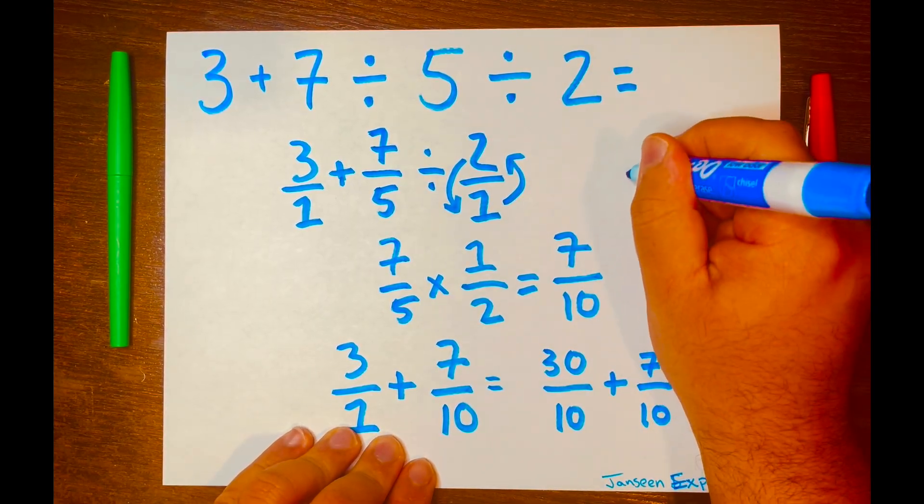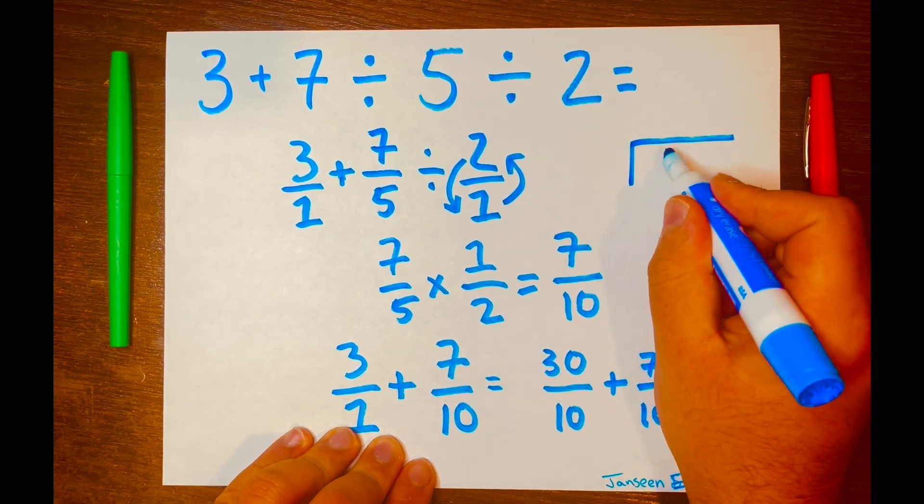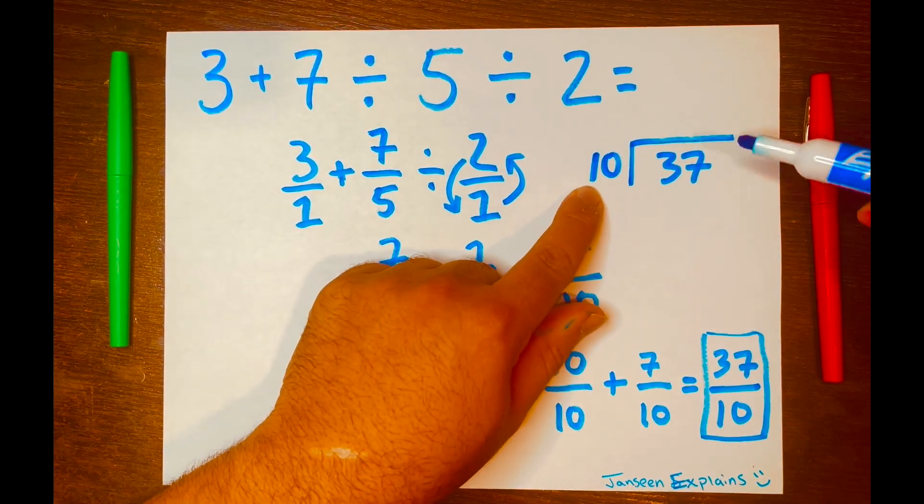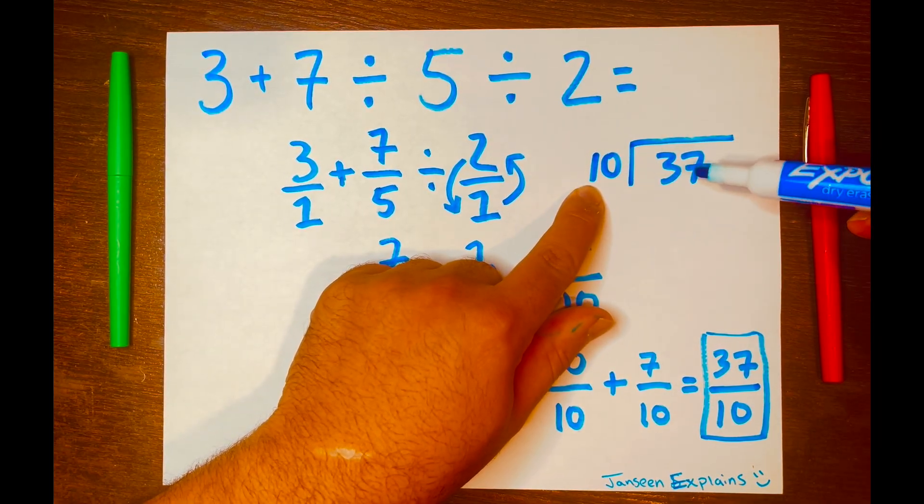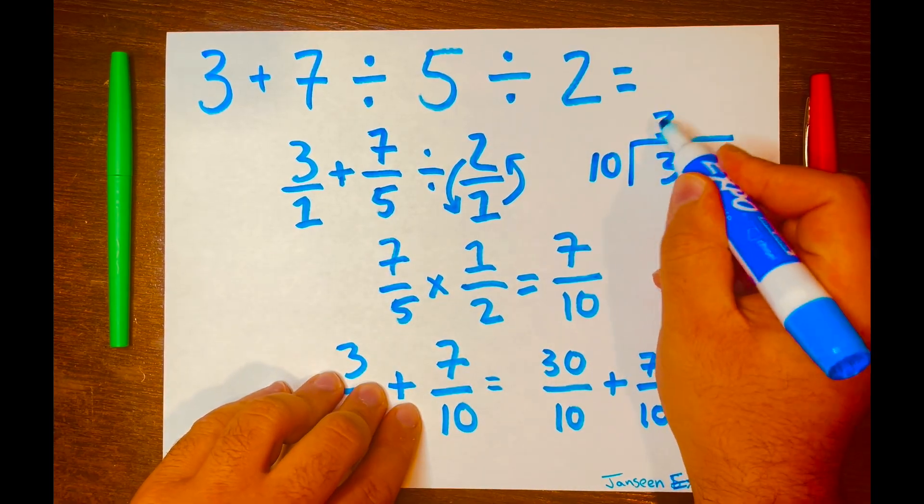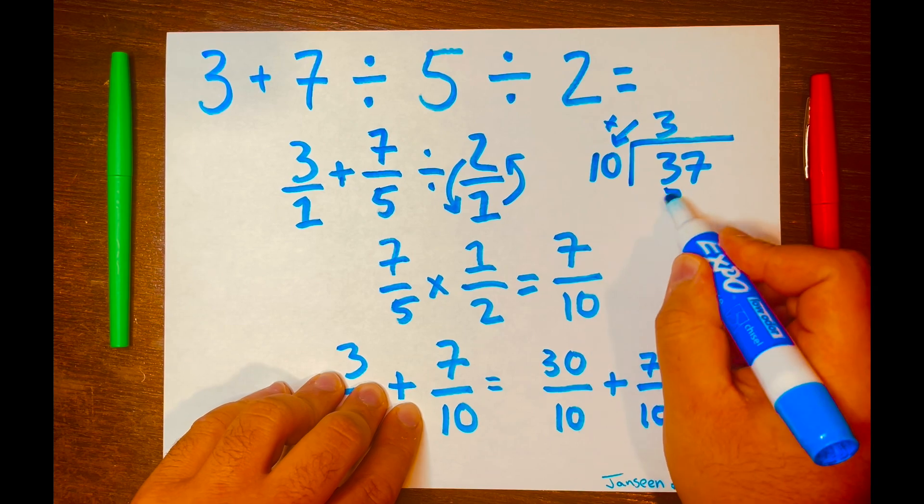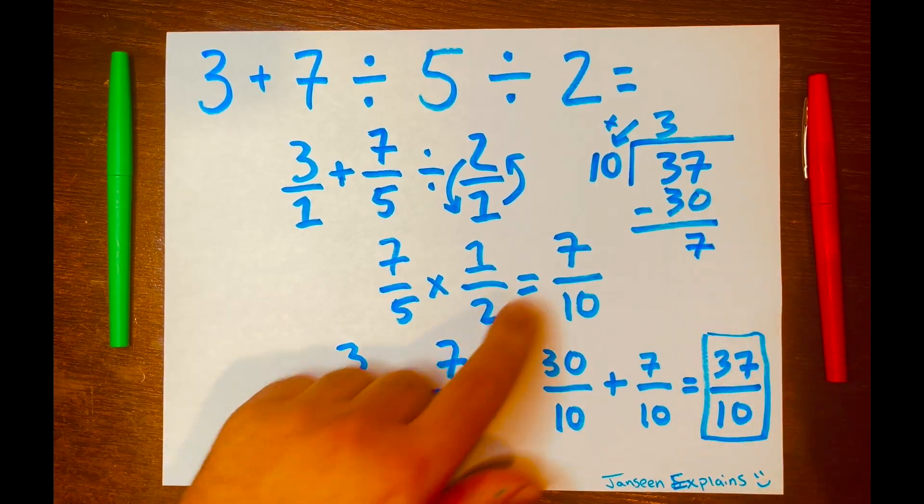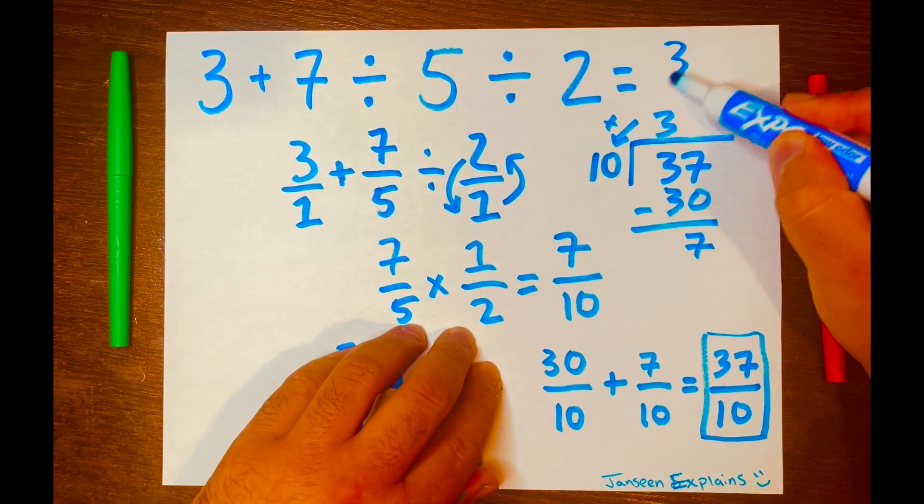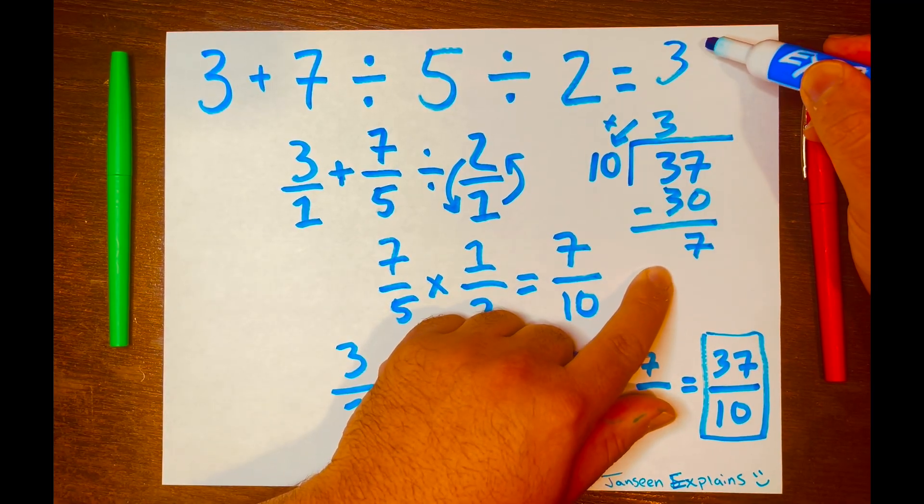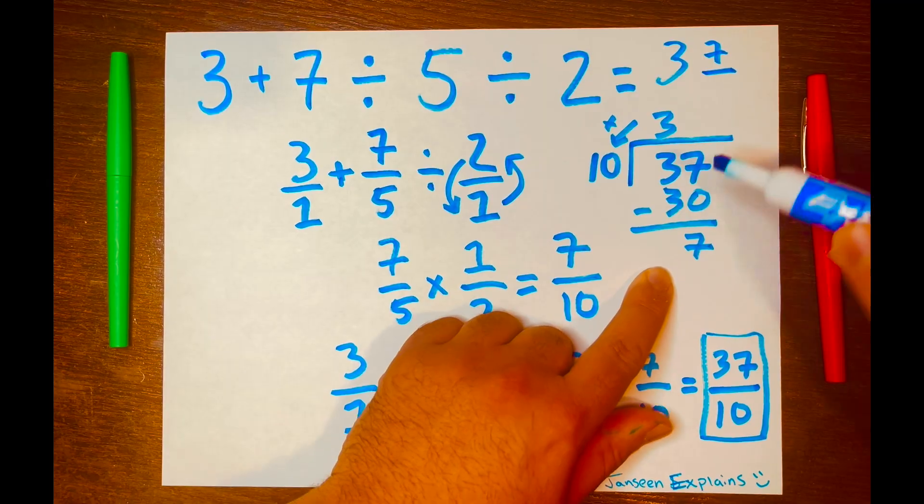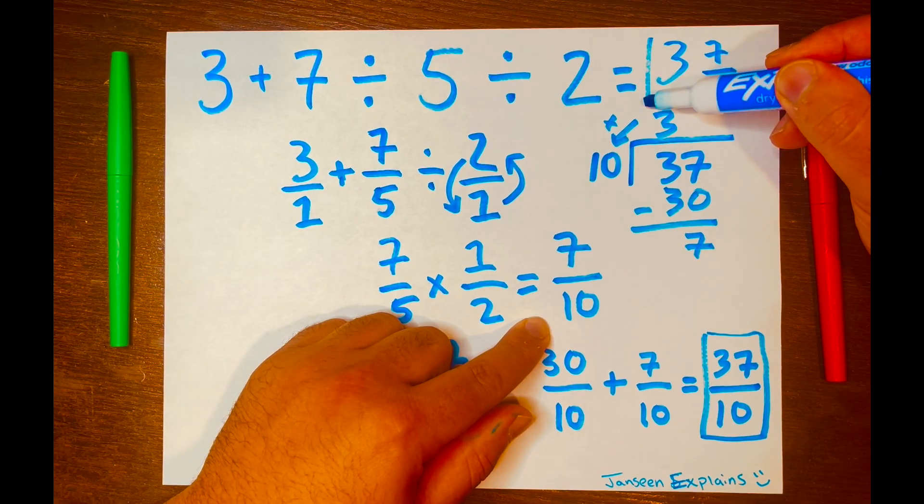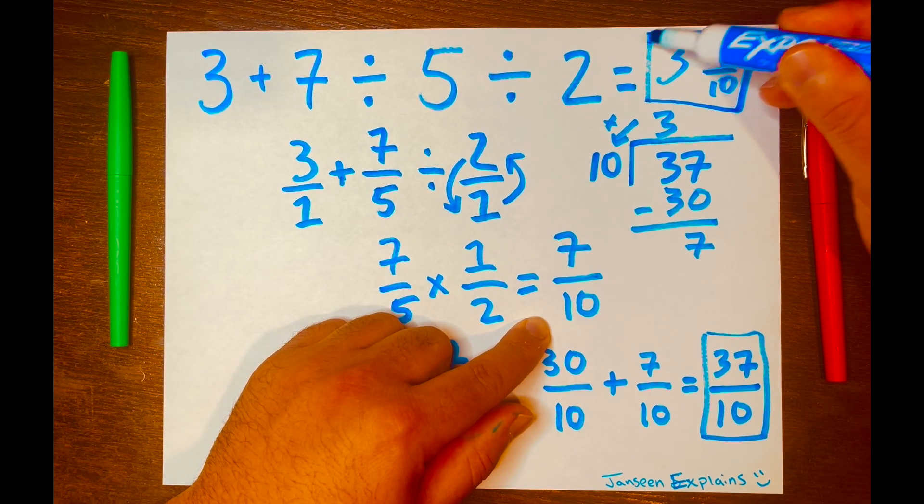So using long division, 37 is the dividend. The 10 is the divisor. So now how many times can 10 fit into 37? 3 times. And 3 times 10 is 30. And 37 minus 30 is 7. So now we have the whole number as 3. And then 7 will be the remainder. And that will be on top of the fraction here. And then 10, we keep the 10 as the denominator. So our mixed answer or mixed number answer is 3 and 7 over 10.